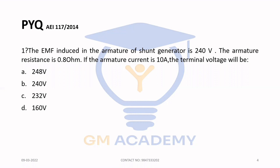The given data will be marked. We have a little equation. EMF induced in the armature of the shunt generator is 240V. Armature resistance Ra is 0.8 ohm. Armature current IA is 10A. We need to find the terminal voltage V.